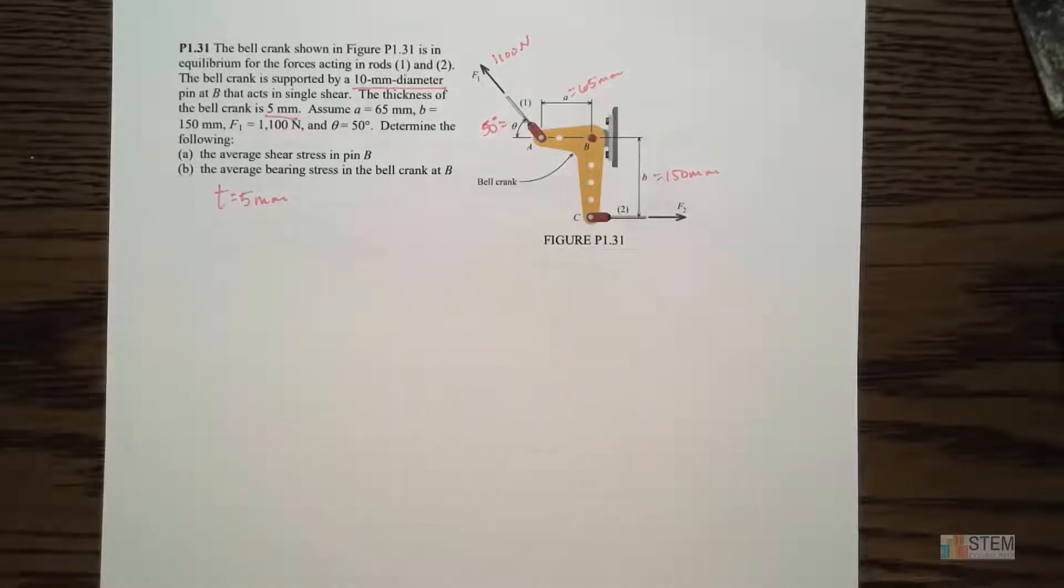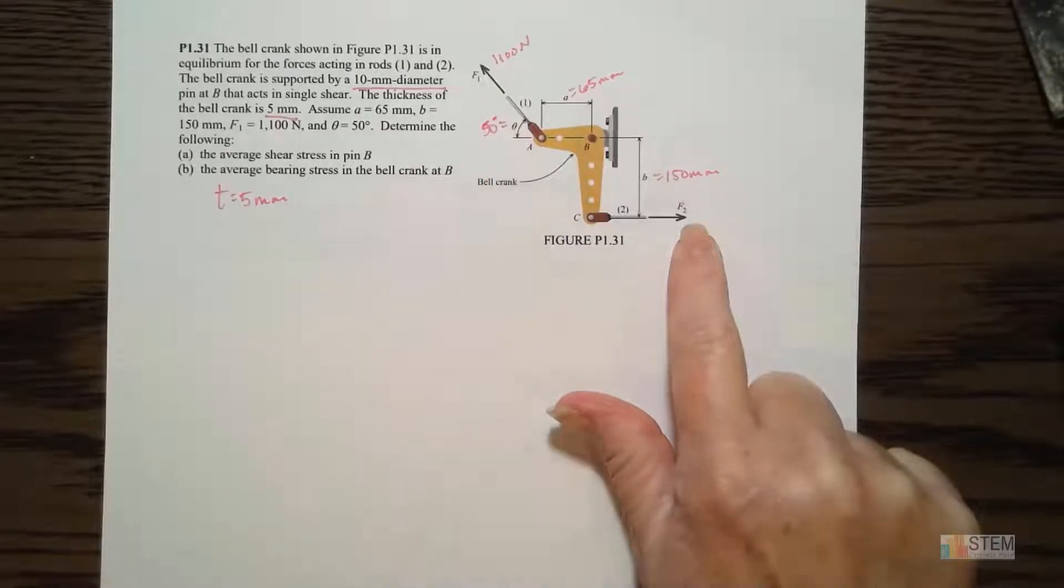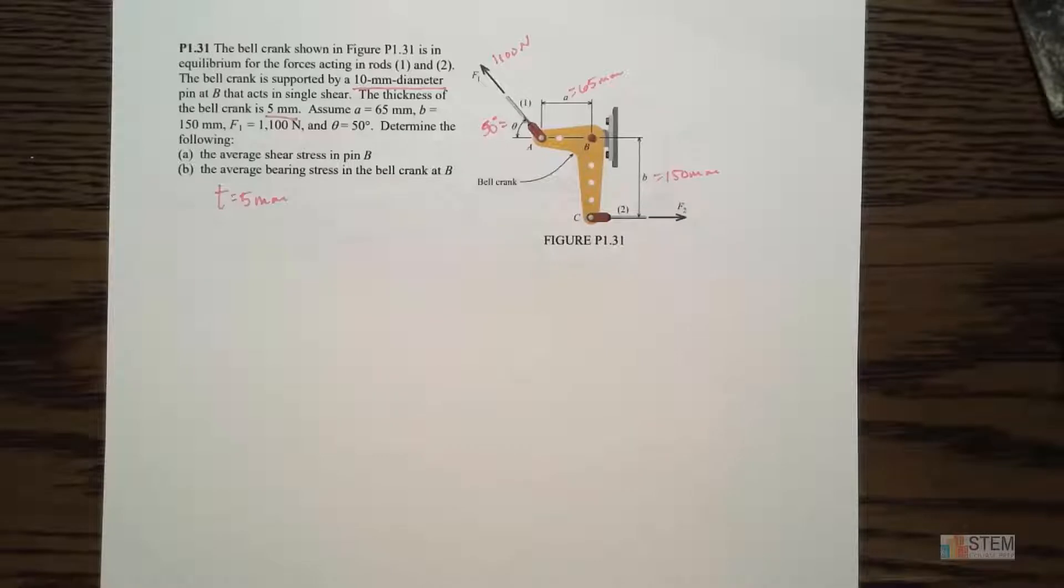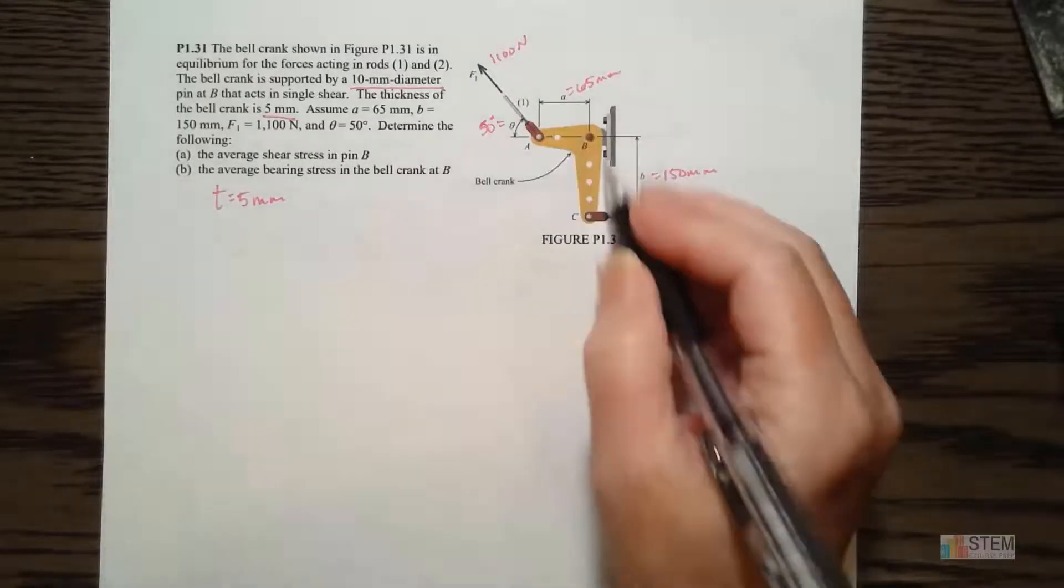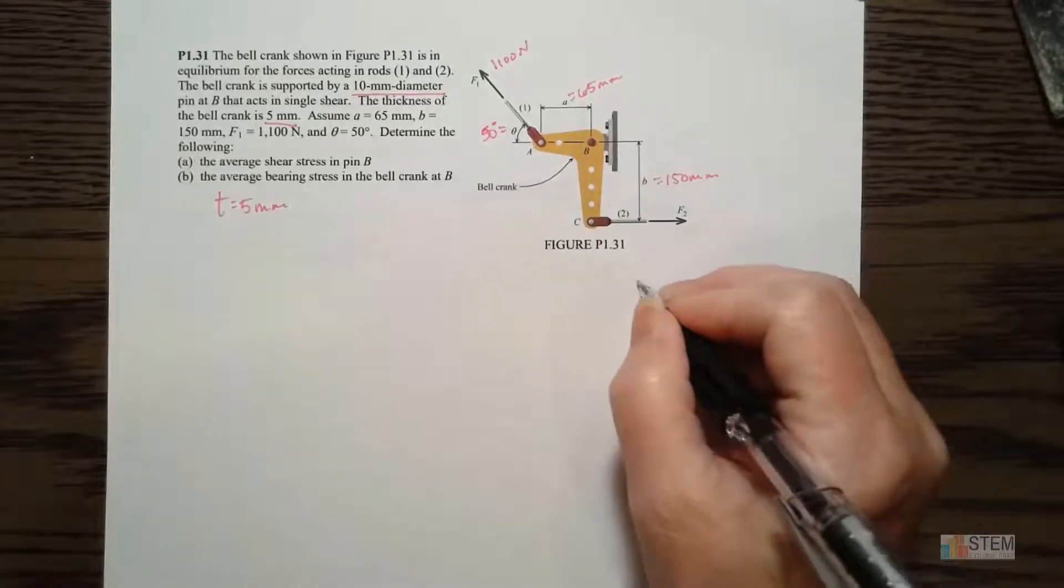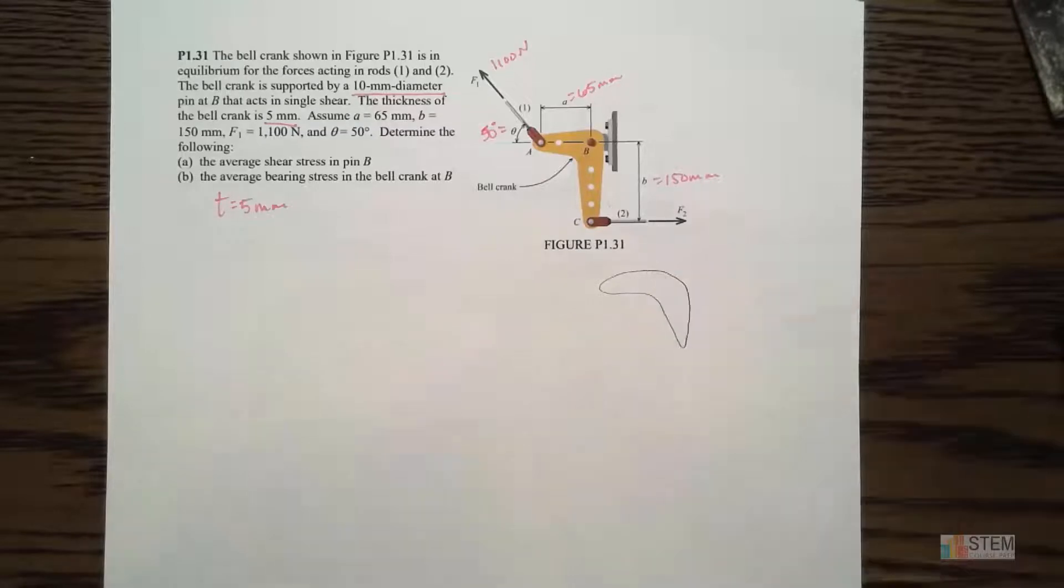So first of all, let's look at all the things we were given. We have these distances, but it didn't tell me about F2. We kind of need to know about that, right? So let's go ahead and find F2 first. To do that, it's just like a basic statics equilibrium problem. We need to draw the free body diagram of the bell crank. That's a terrible drawing, but you all know what I'm trying to draw.